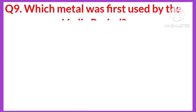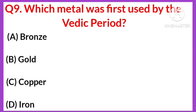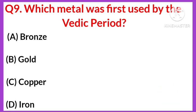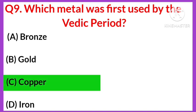Question number nine: which metal was first used in the Vedic period? Your options are: A) Bronze, B) Gold, C) Copper, D) Iron. The right answer is option C, copper.